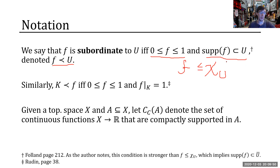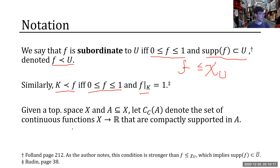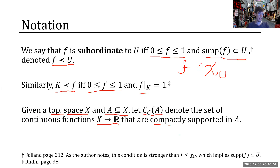That's similar to saying this function is less than or equal to the indicator function for that set, but it's a little bit stronger. We also have a dual notion where a compact set can be subordinate to f, with the condition that f takes values between zero and one and evaluates to one at every point in the compact set. We let C_c(A) denote the set of continuous functions from X into ℝ that are compactly supported in A.